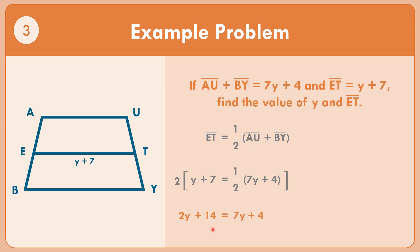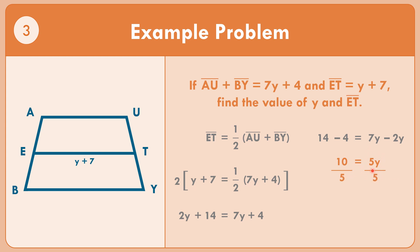Let us combine like terms. Moving Y terms to the right side and numbers to the left: 14 minus 4 equals 10, and 7Y minus 2Y equals 5Y. So 10 equals 5Y. Dividing both sides by 5: 10 divided by 5 equals 2. So the value of Y equals 2.